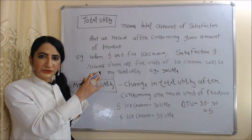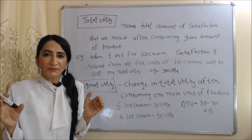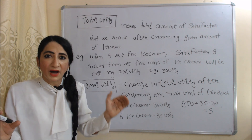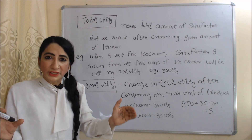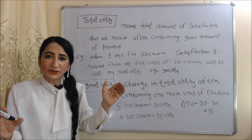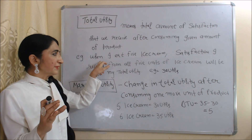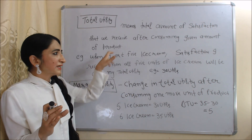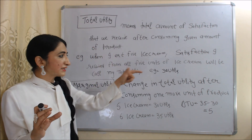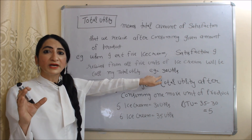Now we will see total utility and marginal utility. Total utility is the total amount of satisfaction that we receive after consuming a given amount of product. For example, I eat 5 ice creams and the satisfaction I receive from all 5 units is equal to 30 utils. This 30 utils will be called my total utility.